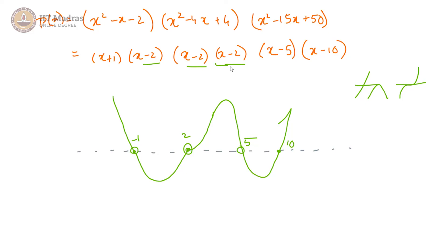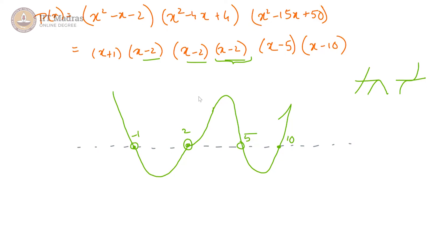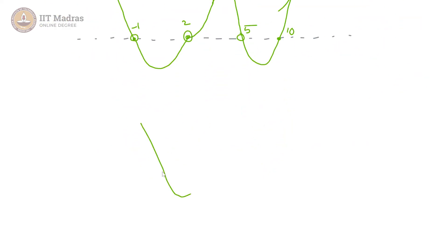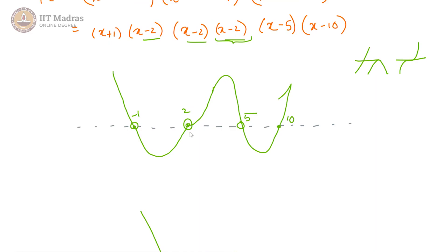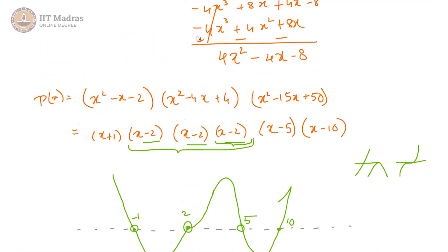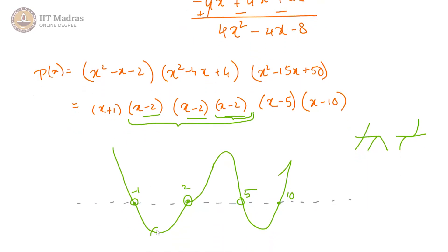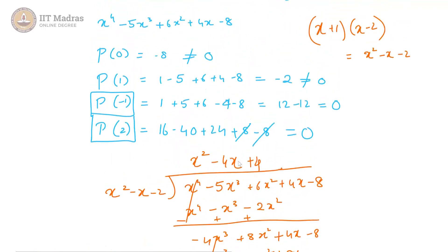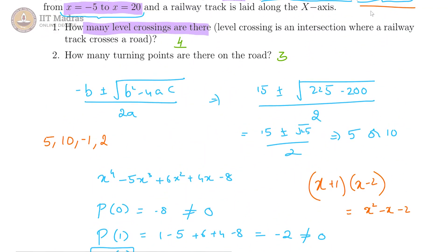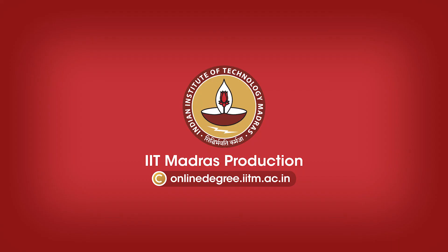If x minus 2 were a double or quadruple root, the graph would be very different — at 2 you would not see an intersection, just a touching, not a cut. So we had to check how many times the root 2 occurs. Since it is an odd number of times (triple), it is actually cutting the x-axis, and that gives us the number of level crossings as 4. And how many turning points are there? We can look at our graph and quickly count: 1, 2, and 3 — 3 turning points.